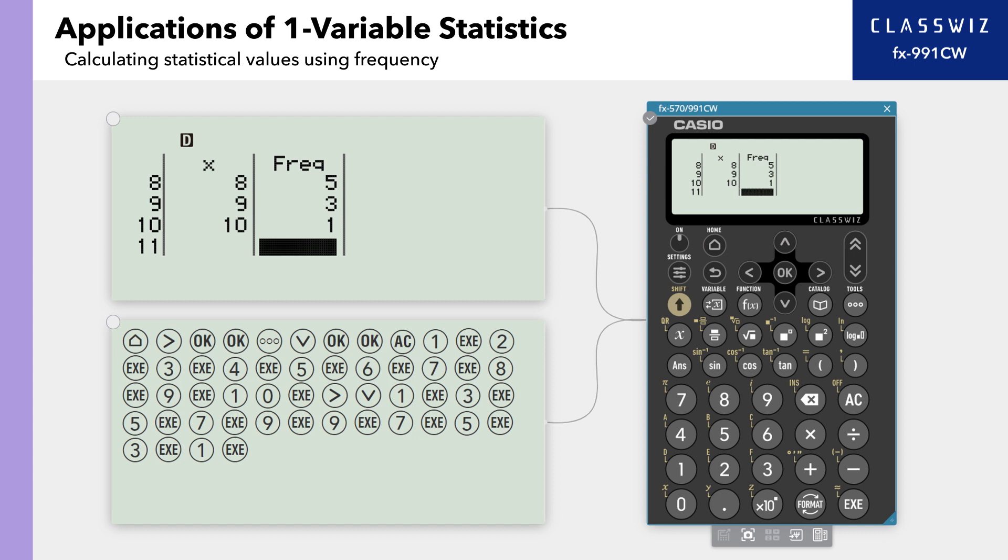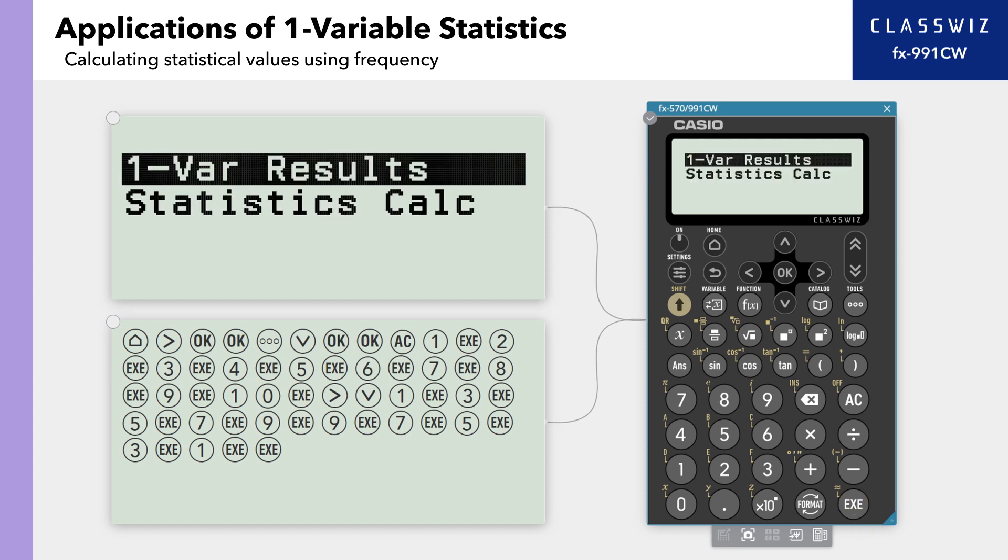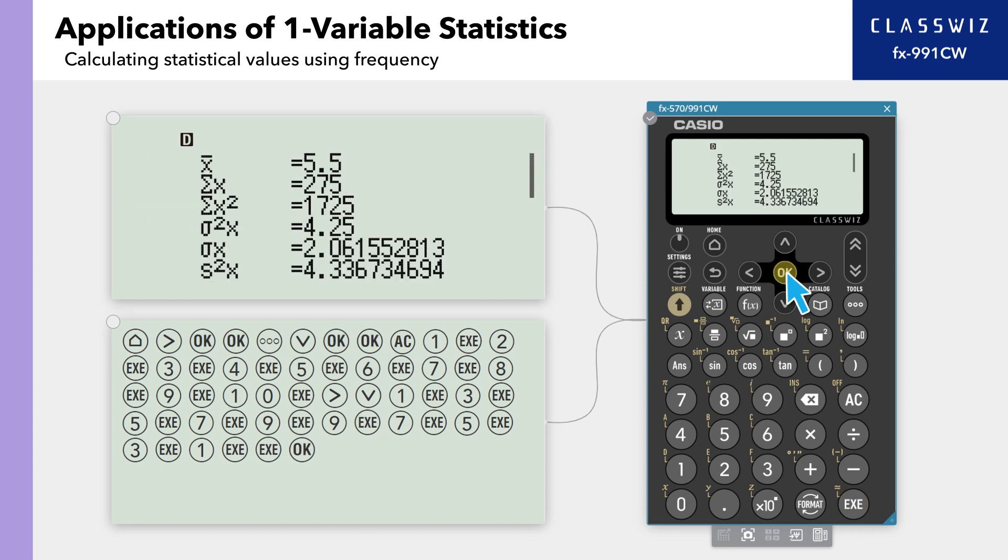Press Execute, then select 1 variable results to see a scrollable list of various statistical values.